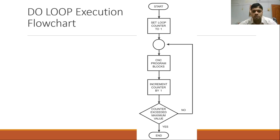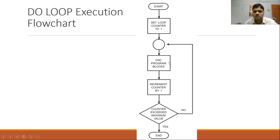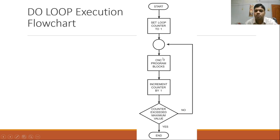The execution flowchart: start the do loop, set the loop counter to one. Then execute the CNC program blocks from where the loop starts. Every time execution happens, the loop counter is incremented by one. Then the end condition is checked — has the counter exceeded the maximum value? If no, it goes back to the program blocks, executes them again, and increments. Once the counter exceeds the maximum value, the loop ends.